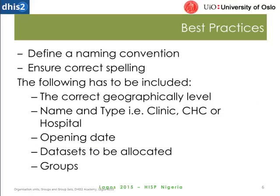For best practices, always remember naming conventions — correct spelling and making sure units are at the right level are very important. Often you'll need to negotiate the levels to make them clearer than they might be in reality. You can change levels and the structure of org units in the future, so be as clear as possible when you start, knowing that changes can be made later.